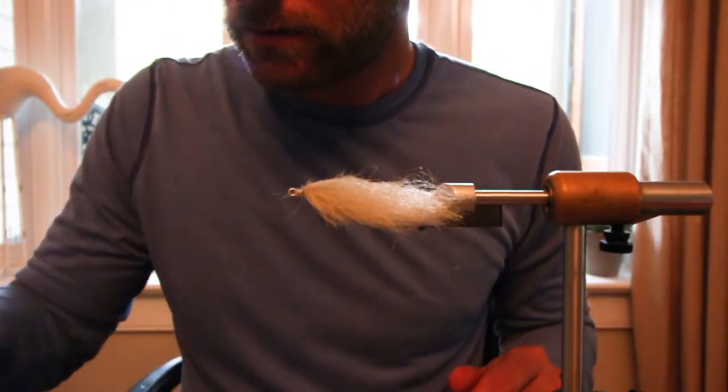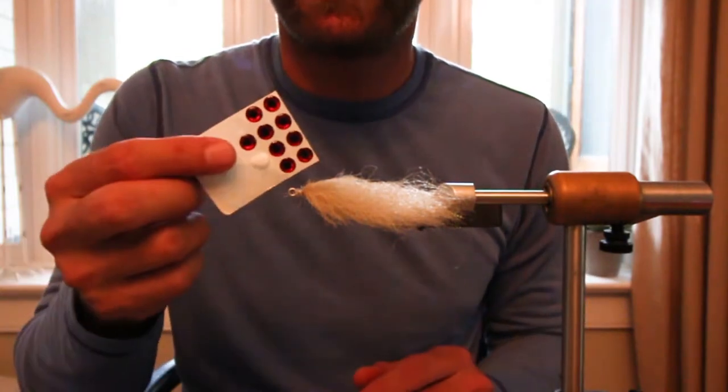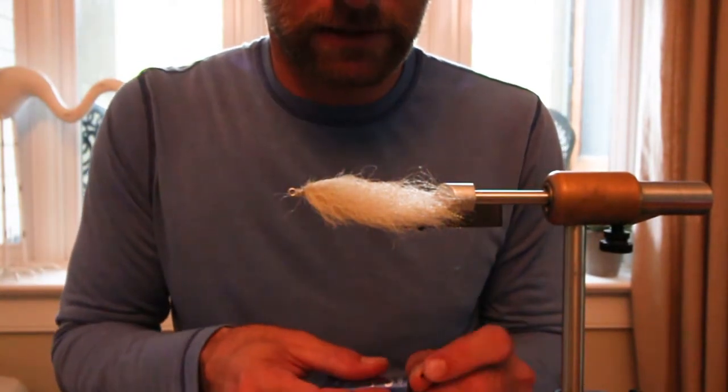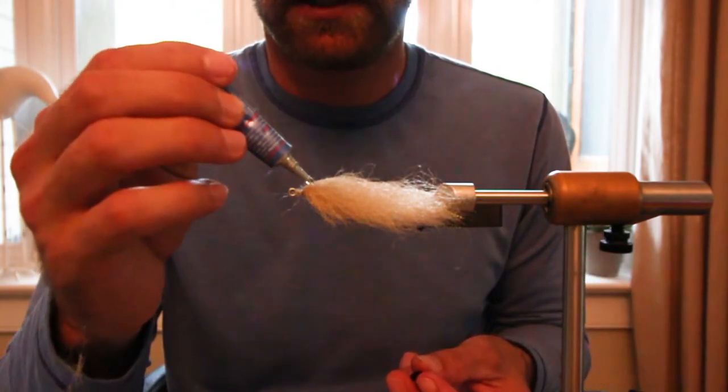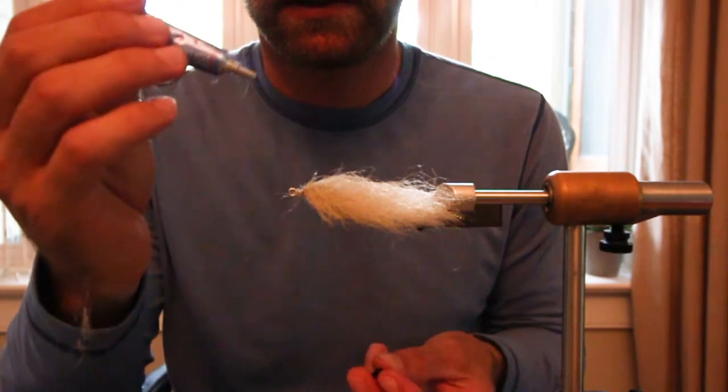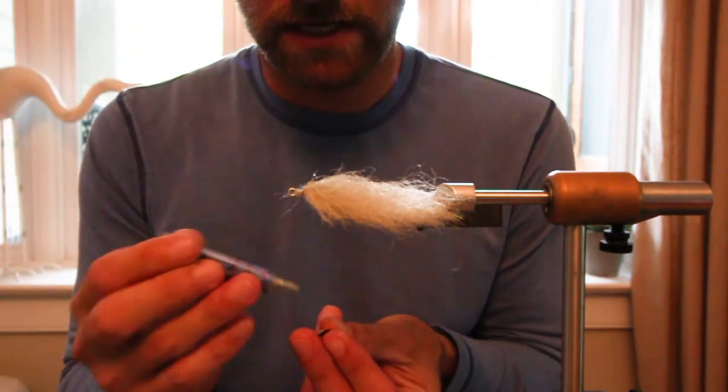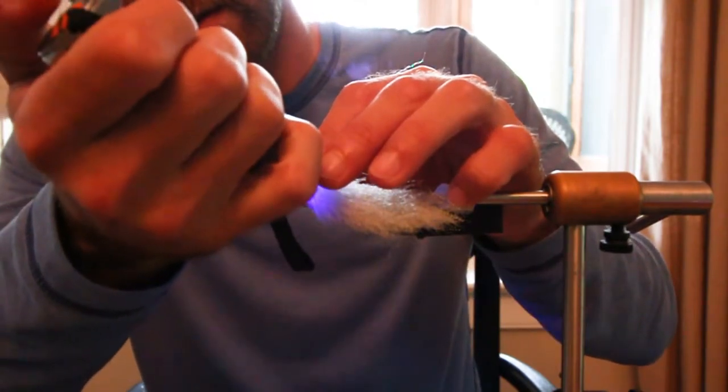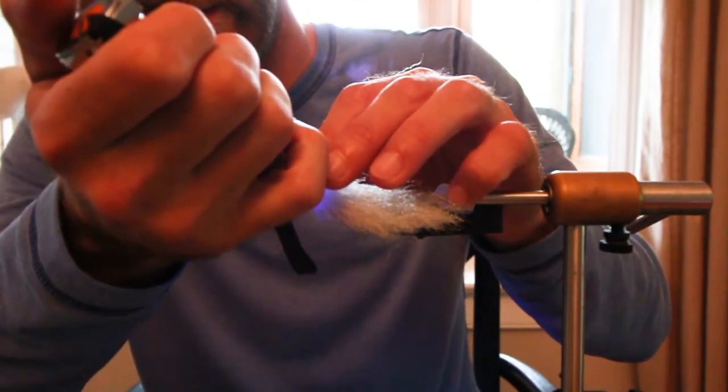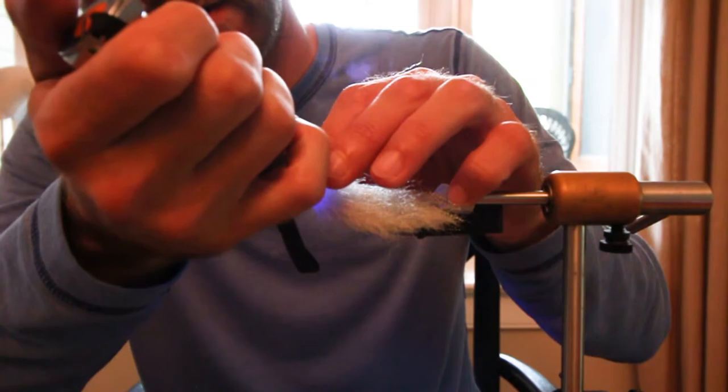All right, I'm gonna be using my red eyes. And I like to add just a little bit of some clear cure where I'm gonna be putting them in. Let that kind of soak in. Dab on the back. Get your eye placement. And then give it a little quick cure to hold that eye on there.